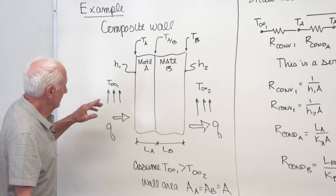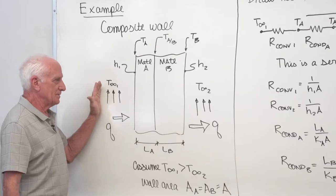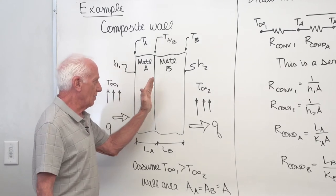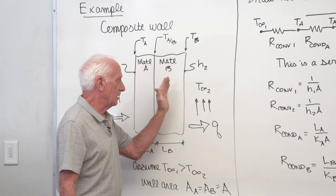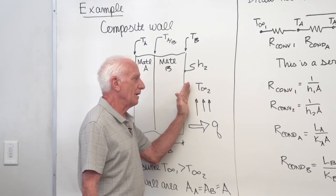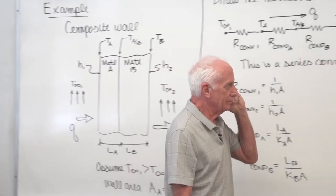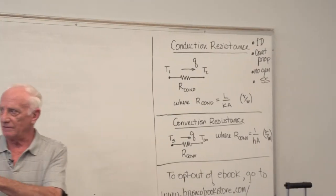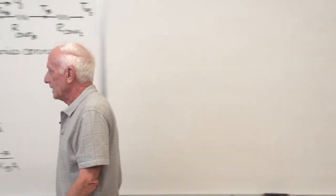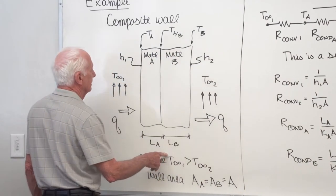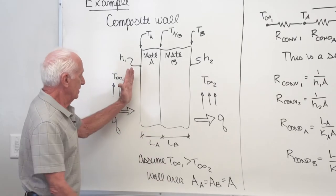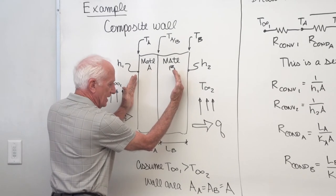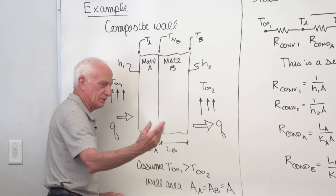If 100 watts comes in from convection into material A, 100 watts goes through material A by conduction, 100 watts goes through material B by conduction, and 100 watts goes out to the fluid at T∞2 by convection. Why? Because of no generation and steady state — what comes in the left goes out the right. The thicknesses of the walls are LA and LB. The areas of both walls are the same, so A sub A equals A sub B — just call it area A.